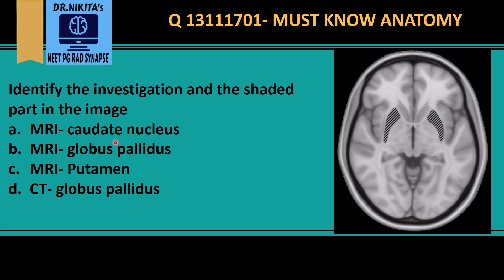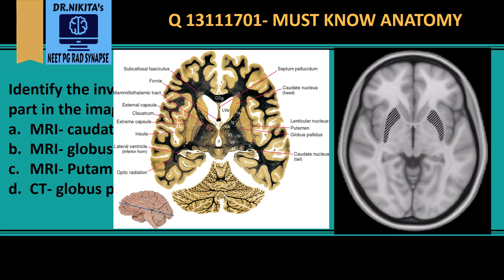Next, we have to identify whether it's the caudate nucleus, globus pallidus, or putamen — basically which basal ganglia structure it is. In the basal ganglia, the part which surrounds the frontal horn of the lateral ventricle is the caudate nucleus head. The rest of the basal ganglia is the lentiform nucleus: the medial part of which is the globus pallidus, and the lateral part is the putamen. Together they form the lentiform nucleus.